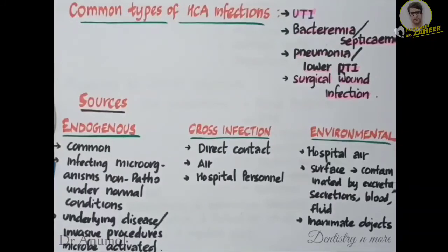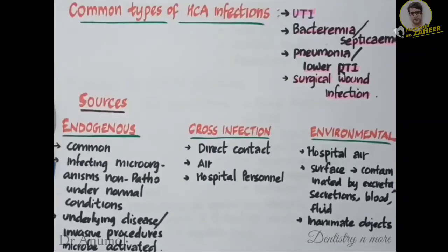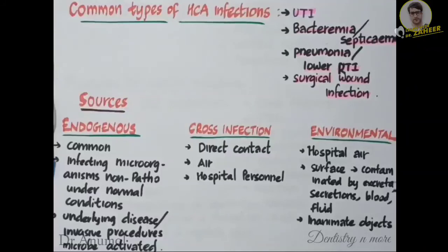Next is cross infection, which can be by direct contact between the infected patient and another individual, mainly through saliva, respiratory secretions, and patient hands. Another route is air — dust from fabric that carries the patient's normal microbial flora — and hospital personnel. Environmental sources include hospital air, which usually harbors many pathogenic bacteria that are resistant to multiple drugs.